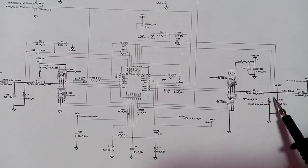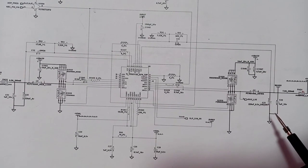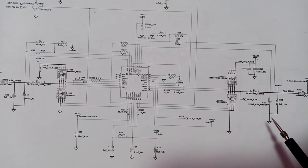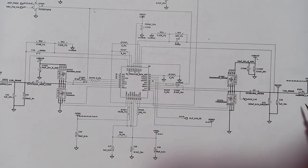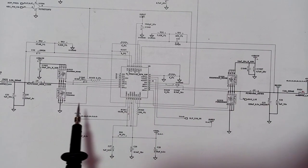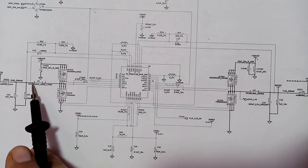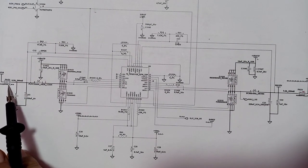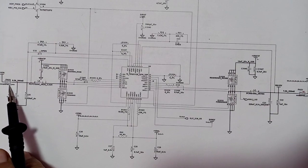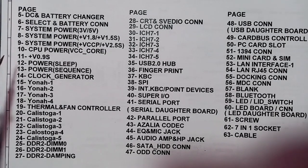After the inductor, we have filtering capacitors — chemical capacitors and ceramic capacitors. The ceramic capacitors reduce noise in the circuit. Then we have the output point where we get 5 volt. The same applies to the 3 volt circuit: it has an IC, two MOSFETs, an inductor, capacitors, and a test point where we check for 3 volt output.